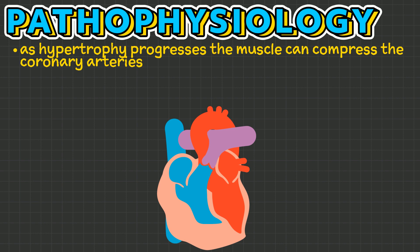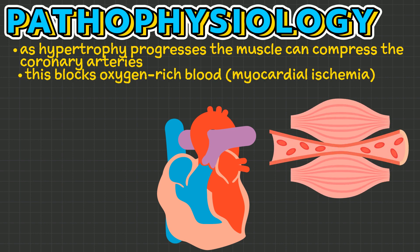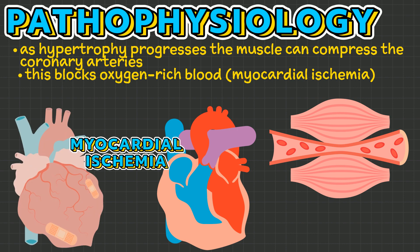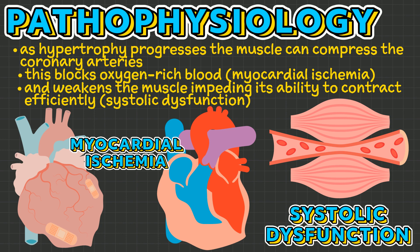As hypertrophy progresses, it can compress the coronary arteries, blocking the flow of oxygen-rich blood to certain areas of the heart muscle, leading to myocardial ischemia. This weakens the muscle, impeding its ability to contract efficiently, causing a systolic dysfunction.